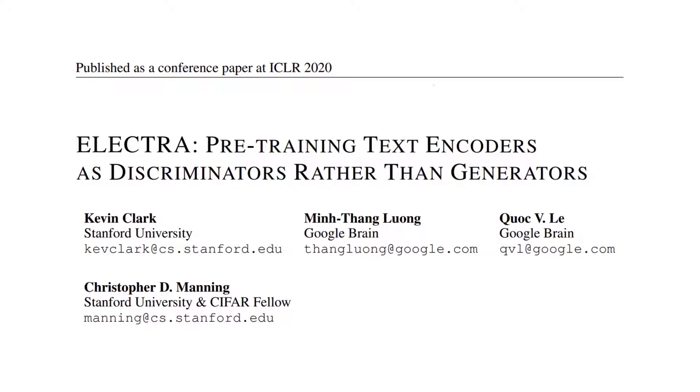Hey guys, so today we're looking at the paper ELECTRA: Pre-training text encoders as discriminators rather than generators by authors from Stanford University and the Google Brain team.